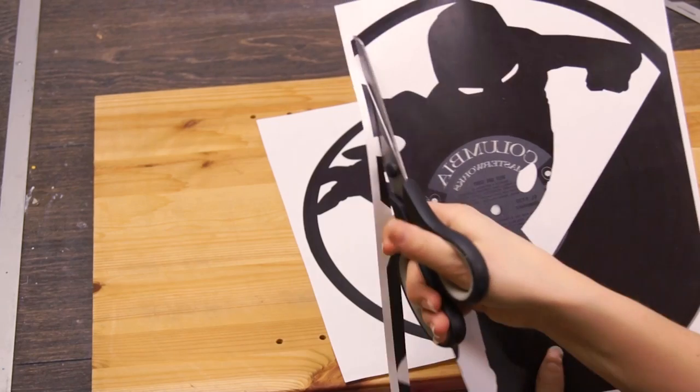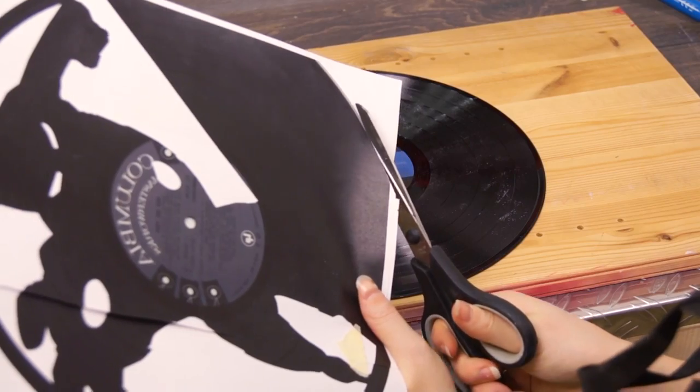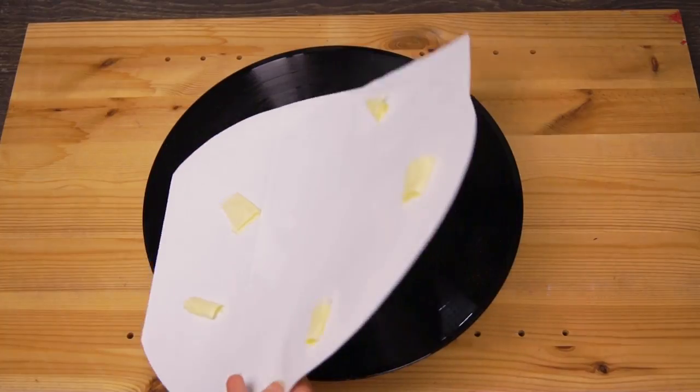Now we just got to take our prints and tape the two halves together. I mean, we can't have just half a template right? Then we can tape it onto the record.